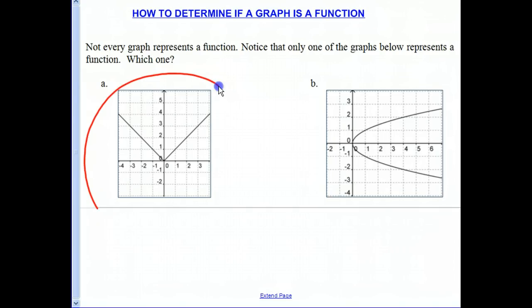So looking at this graph on the left, you will not be able to find any place where an input gives more than one output. So for instance, at negative one, the output is one. At one, the output's one. At two, the output is two.